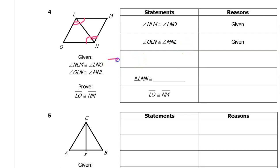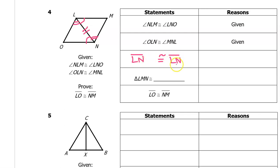We need one additional congruent statement in order to prove that the triangles are congruent. We've used up the given. We have a shared side right here — this will always be congruent. So we can write that segment LN is congruent to segment LN. The shared side is congruent to itself, and whenever you say that something is congruent to itself, the reason is the reflexive property.